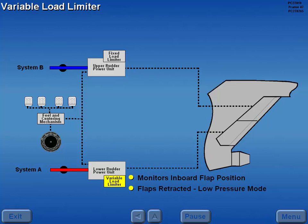The lower rudder has a variable load limiter which monitors inboard flap position. When the flaps are retracted, the rudder operates in the low pressure mode. When the flaps are extended, the rudder operates in the high pressure mode.